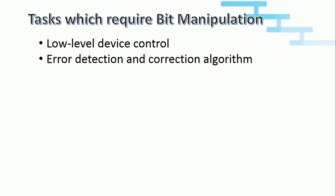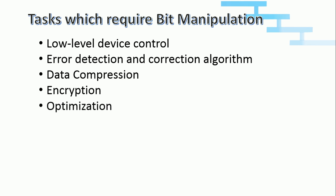Then, data compression algorithm using bit manipulation — check my video tutorial on data compression using Huffman coding, link also in the description. Then, bit manipulation is used in various encryption algorithms, that is to encrypt data while sending from one endpoint to another. And another thing is optimization — to optimize the performance of an existing function or operation, we use bit manipulation.